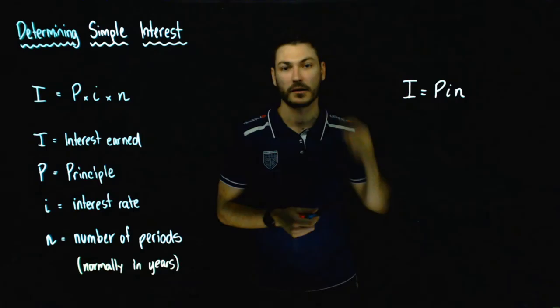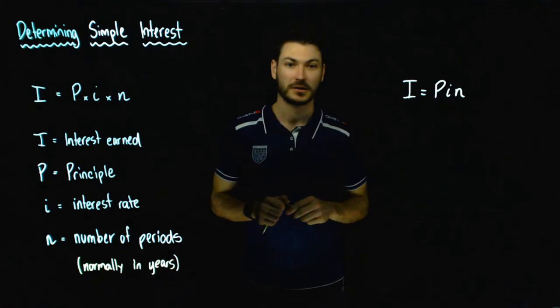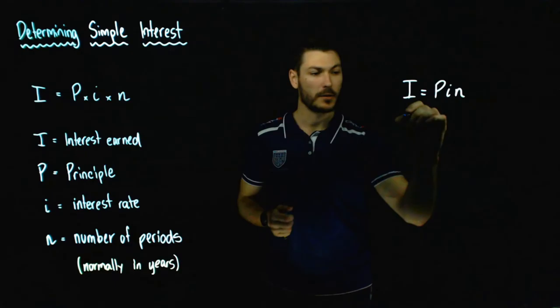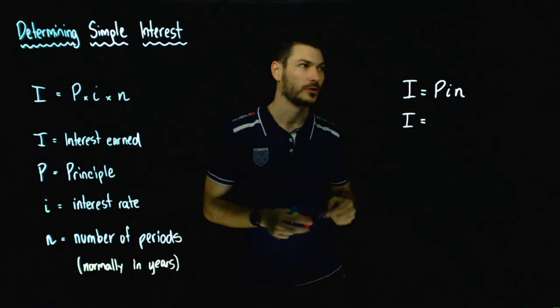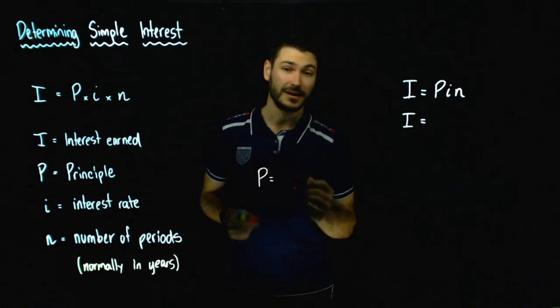A nice way to remember the formula, say for example in a test, is that when you take money out of your bank account, you use your PIN number. So money is related to PINs — so I equals P-I-N. Now we want to substitute values in for P, I, and N. In this example, P is going to be $30,000 — that's how much I'm borrowing.